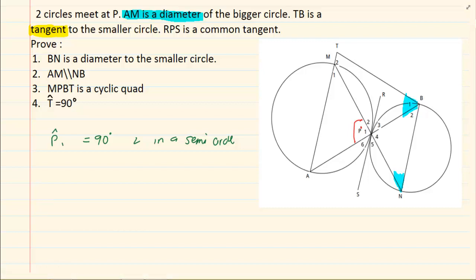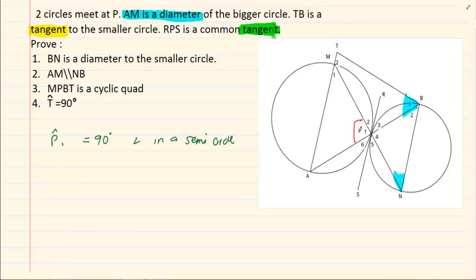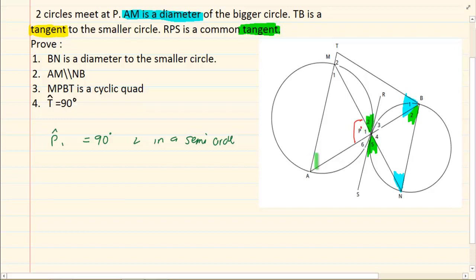Then they go on to say that RPS is a common tangent. Again, tangent rules are very important. Three tangent rules: tangents from the same point — we don't have two tangents, that rule falls away. Tangent perpendicular to radius — we don't have a radius, that rule falls away. But the tan-chord theorem we know: if this is a tangent, then this angle is going to equal B2. We can also see that this is vertically opposite. Notice what I'm doing — the angles that are the same I am marking the same color, and I am also coloring the word that's helping me get this information the same color.